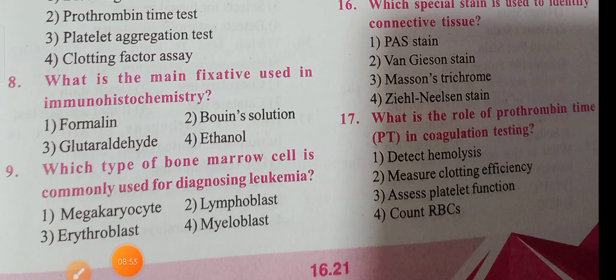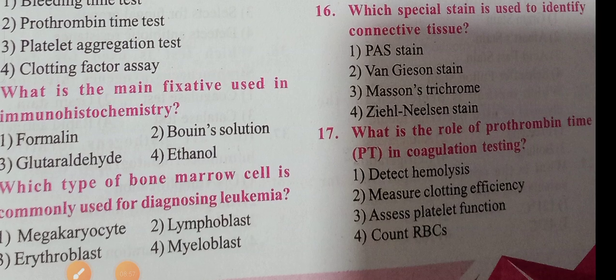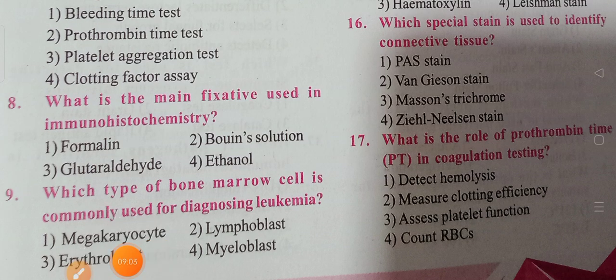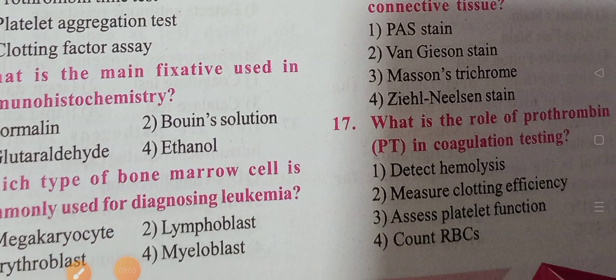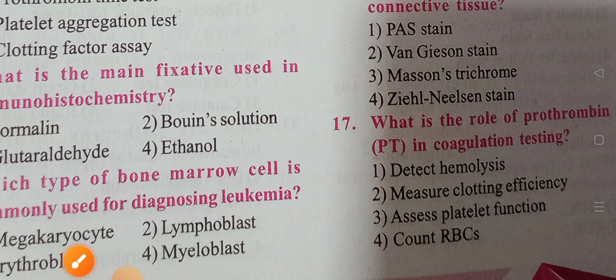Next question: what is the role of prothrombin time in coagulation testing? The options are detect hemolysis, measure clotting efficiency, assess platelet function, or count RBCs. Option two, measure clotting efficiency, is the correct answer. That is the main role of prothrombin time (PT) in coagulation testing. Thank you all for watching. In the next video I will come with more questions — thank you, bye bye, see you.